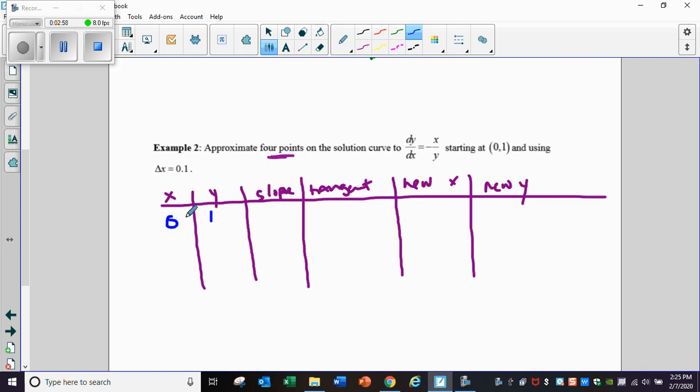Here's our first point. Plugging in this point into our slope, 0 over 1 is a slope of 0, so the tangent line is just y equals 1. The new x value, we take the old x value, and we add 0.1 to get 0.1. If we plug in 0.1 into this tangent line, we still get the new y of 1.